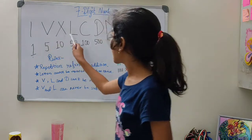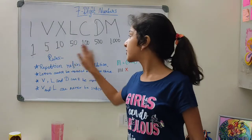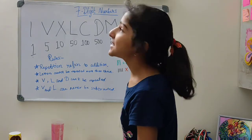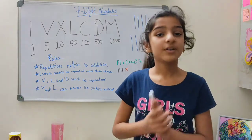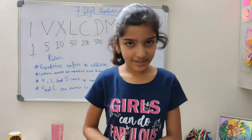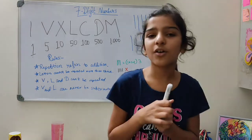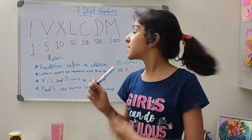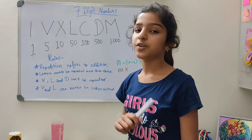The letters V, L, and D can never be repeated. An easy way to remember: each number starting from 5 — that is 5, 50, 500 — can never be repeated. Next rule: if a smaller number comes after a bigger number, it refers to addition; and if a bigger number comes after a smaller number, it refers to subtraction.